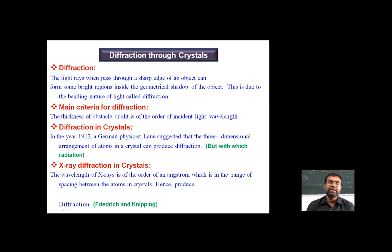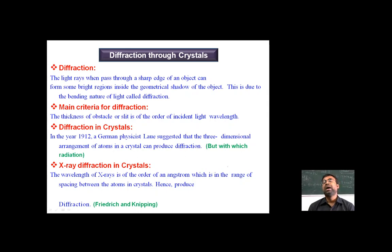In the year 1912, a German physicist von Laue suggested that the three-dimensional arrangement of atoms in a crystal can produce diffraction. The radiation suitable for this is X-rays, whose wavelength is of the order of an angstrom — in the range of spacing between atoms in a crystal — and hence X-rays produce diffraction.